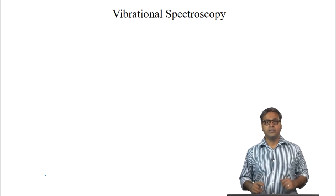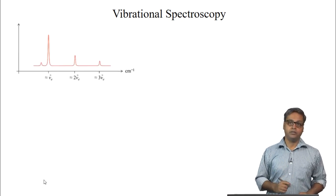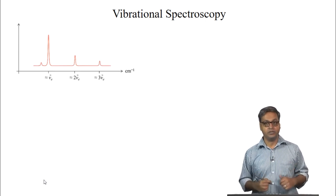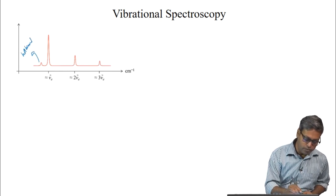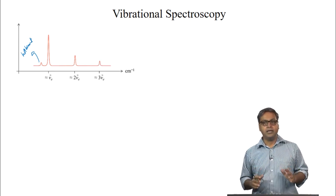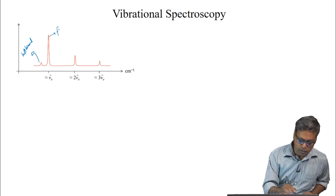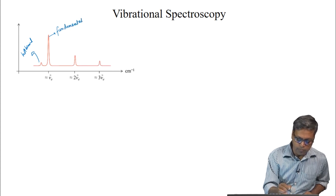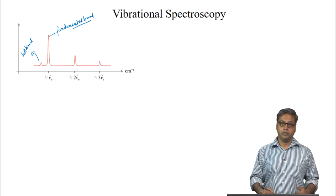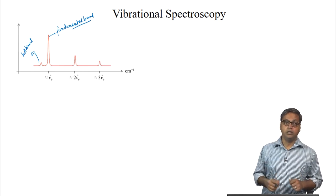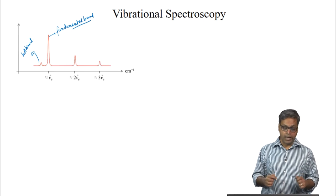Let us once more see where all these bands will appear in a spectrum. This figure shows 4 bands of different intensities at different frequencies. The leftmost band is the hot band. This band is at a frequency smaller than the fundamental band because the gap between v equals 1 and v equals 2 is smaller than the gap between v equals 0 and v equals 1.